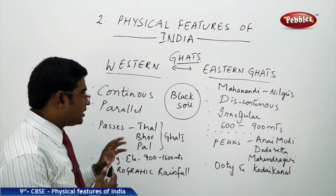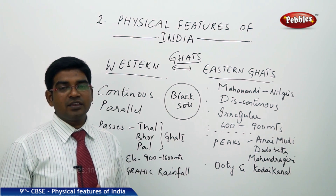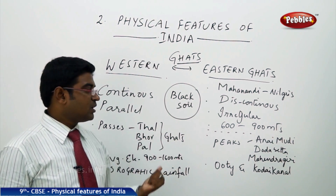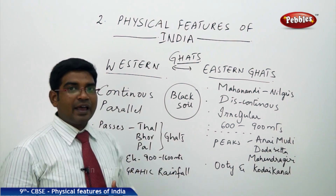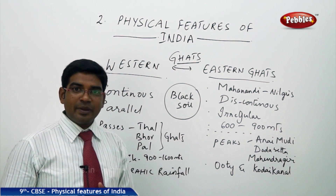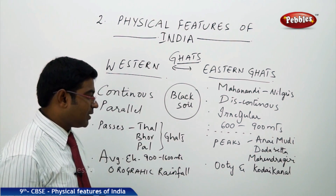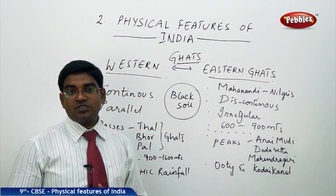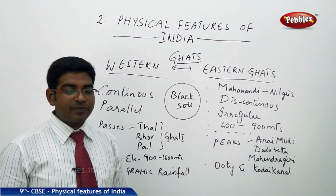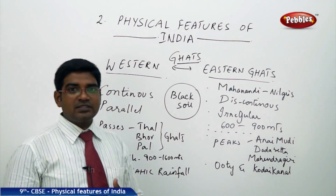In both the Eastern and Western Ghats, we have certain peaks which are very high compared to their average heights. Anamudi is the highest peak at 2695 meters, followed by Doddabetta, and Mahendragiri hills comes at third place. Famous hill stations in the peninsular plateau are Ooty and Kodaikanal.